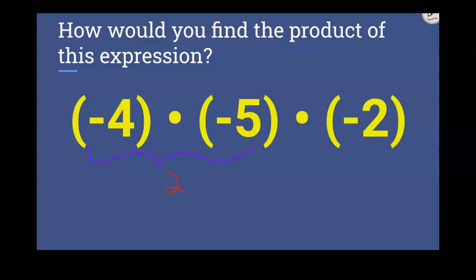And you would get a value of positive 20. And then you would multiply that answer by negative 2. So now we have a positive times a negative, and we get negative 40.